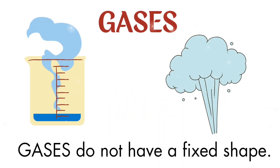Gases also do not have a fixed shape. For example, how do we smell a burning incense stick? The gas produced on burning spreads to the entire space available in the room. Like liquids, gases cannot be kept in an open container — we need a closed container. For example, an inflated balloon has air filled in it.